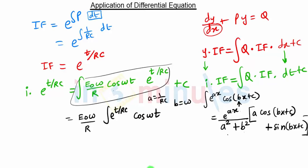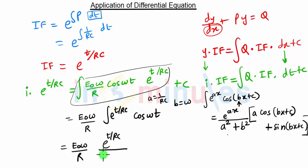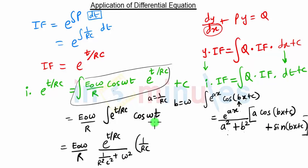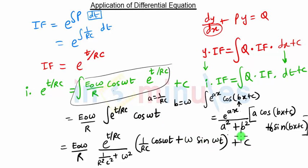In our case, A is 1 upon RC and B is omega. Applying the formula, we get E raised to t/RC upon (1 upon R squared C squared plus omega squared), multiplied by A, which is 1 upon RC, times cos(ωt) plus B, which is omega, times sin(ωt). This gives us the result of the integration.